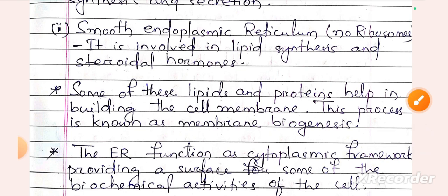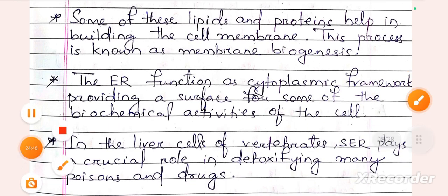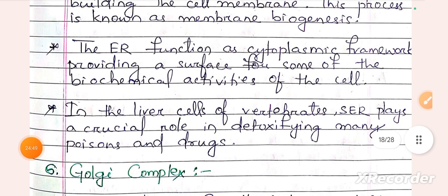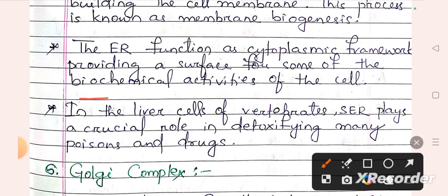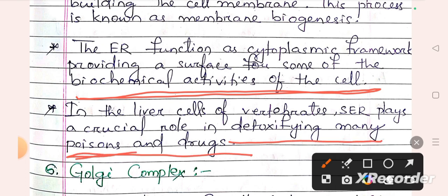The endoplasmic reticulum also helps in building of the cell membrane — this process is known as membrane biogenesis. The ER provides a cytoplasmic framework and surface for some biochemical activity of the cell. In the liver cells of vertebrates, smooth endoplasmic reticulum plays a crucial role in detoxifying many poisons and drugs.